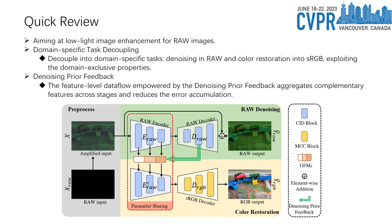Furthermore, we introduce the denoising prior feedback. This feature-level dataflow aggregates complementary features across stages, reducing error accumulation. It serves as a bridge, ensuring a smooth and effective transition from raw denoising to sRGB color restoration.